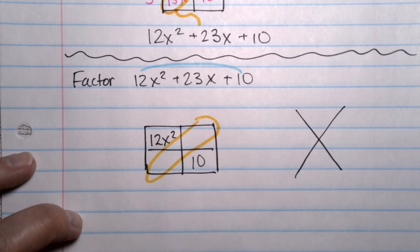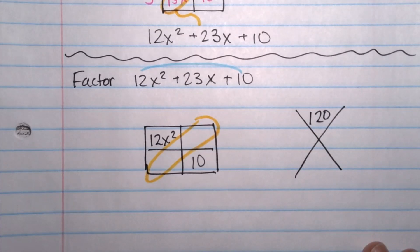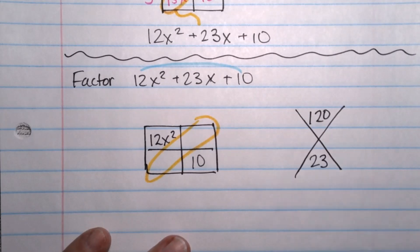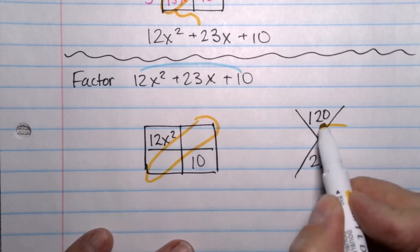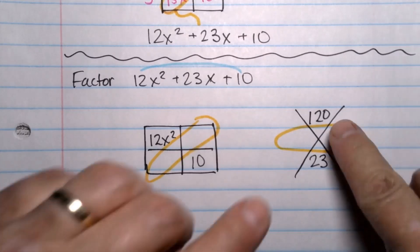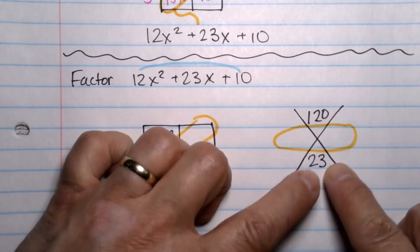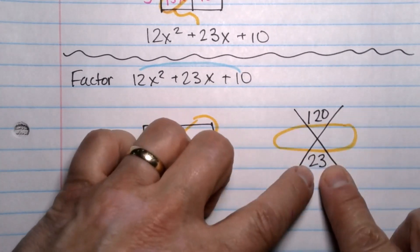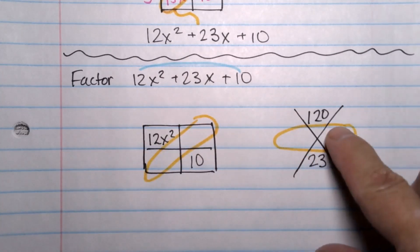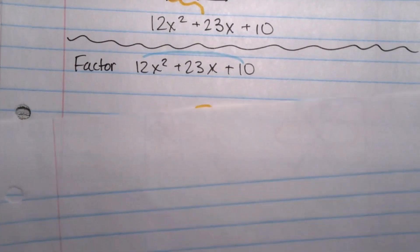Multiply those two together, and you get 12 times 10, that's 120. Put that in the top part. Then you take the 23, and you put that in the bottom part. And what we are looking for is exactly what we need for these boxes, is two numbers whose product is 120, but whose sum is 23. Again, they multiply to be 120, but they add to be 23. So it's kind of a little riddle.